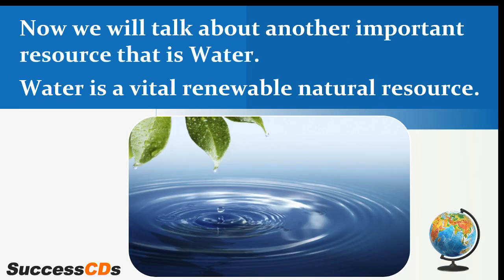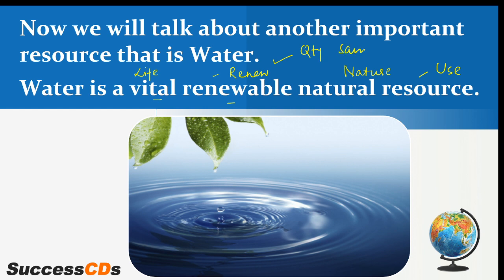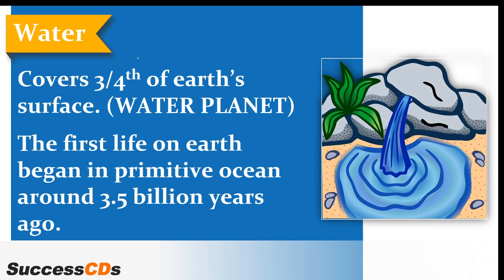Now we will talk about water. Water is a very important natural, vital, and renewable resource. It is natural because it comes freely from nature, vital because there is no life without water, and renewable because the quantity remains constant through the water cycle. Three-fourths of the Earth's surface is covered by water, which is why Earth is known as the water planet. If you look at Earth from the moon, it appears blue because most of it is covered by water.